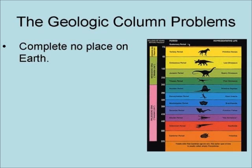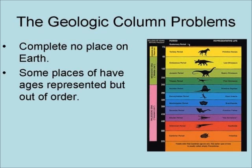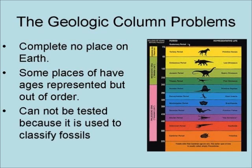Now, there are a few places that have all of the geologic ages represented, but none have the complete columns. On the other hand, there are some places that have the ages represented but out of order, and these are commonly explained as overthrust. The biggest problem with the geologic column is that it cannot be tested, because it is used to classify fossils without other factors that could be used to test it.